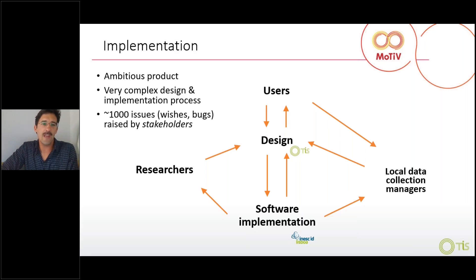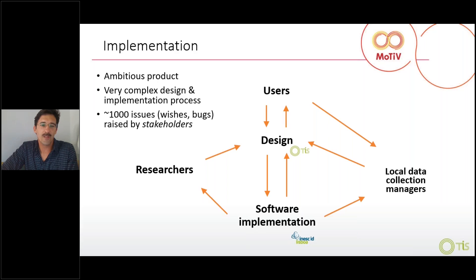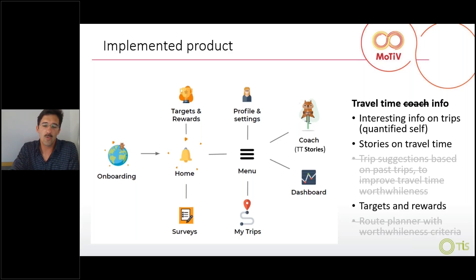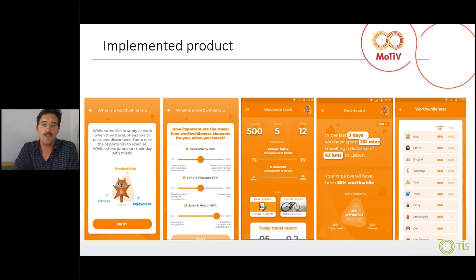The complexity arose from interactions with researchers, local data collection managers, technical difficulties, and interactions with users. Within the resources and time available, the intended product differed from what was possible. The possible product wasn't fully the coach we had imagined, but we still included interesting info on trips, stories on travel time, targets, and rewards — so we still managed to capture some of the initial intention to incentivize people, even if not fully as imagined.